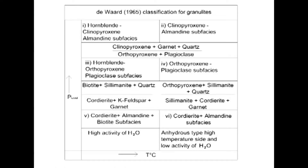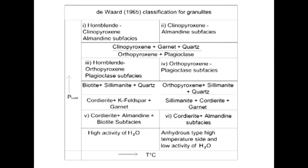Dewey's classification for granulite facies: in 1965, Dewey proposed some new sub-facies. They continued typical assemblages of clinopyroxene and biotite based on the activity of water. We can observe how the load pressure increases and facies change with activity of water. The first sub-facies is hornblende, clinopyroxene, almandine. Second is clinopyroxene, almandine sub-facies with clinopyroxene plus garnet plus quartz. The reaction is orthopyroxene plus plagioclase gives rise to clinopyroxene plus quartz plus water. The clinopyroxene and garnet product indicate the increase of pressure and temperature.